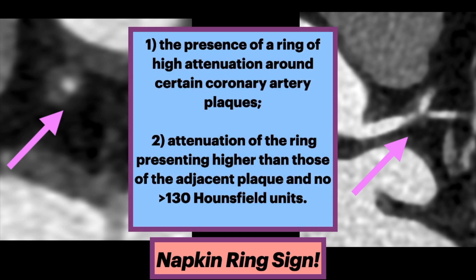In other words, there is presence of a ring of high attenuation around certain coronary artery plaques, and the attenuation of the ring is higher than that of the adjacent plaque, but not greater than 130 Hounsfield units.